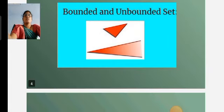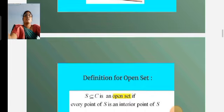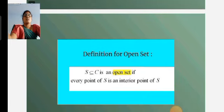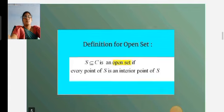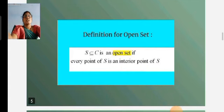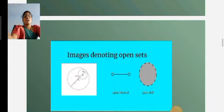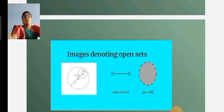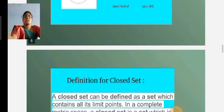Definition for open set: A set S is called open if every point of S is an interior point of S. Examples denoting open sets include the open interval and the open disk.